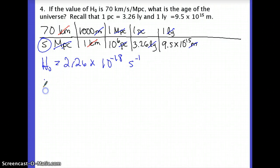The age of the universe is 1 over H₀, so I can do 1 divided by 2.26 times 10⁻¹⁸, and I have 4.4 times 10¹⁷ seconds. That is the age of the universe: 4.4 times 10¹⁷ seconds.